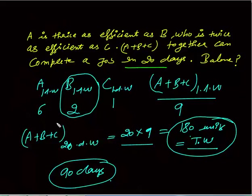This question can be solved verbally without writing. Assume C's one-day work as 1, B as 2, A as 6, total is 9. One day they do 9 units, in 20 days they do 180, and B completes that 180-unit work in 90 days.